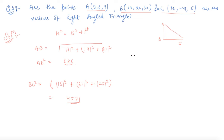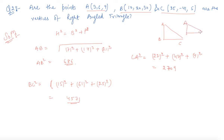Now let us find CA squared. CA squared: 3 minus 25 is minus 22 squared; plus 6 minus (minus 41) is 47 squared; plus 9 minus 5 is 4 squared. So CA squared is 279. Checking the Pythagorean condition: AB squared plus CA squared is not equal to BC squared.